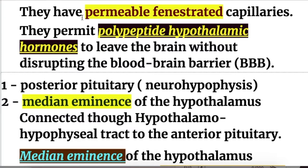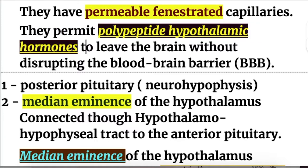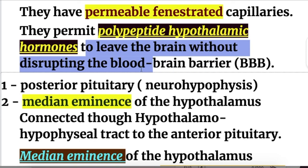These circumventricular organs have permeable fenestrated capillaries, as opposed to the blood-brain barrier capillaries which have tight junctions and do not allow every substance to pass into the brain, especially proteins. But these circumventricular organs permit polypeptide hypothalamic hormones — the hormones produced by the hypothalamus — to leave the brain without disrupting the blood-brain barrier. So what are those circumventricular organs?